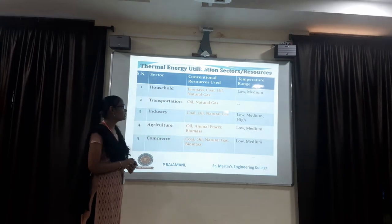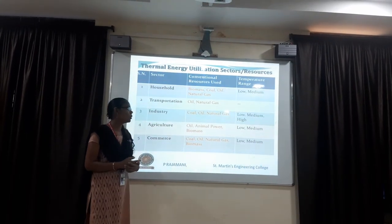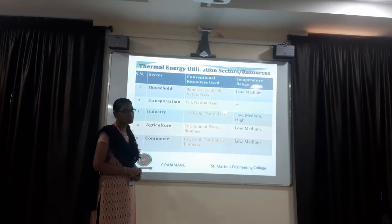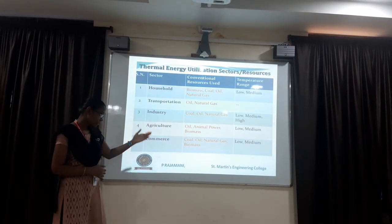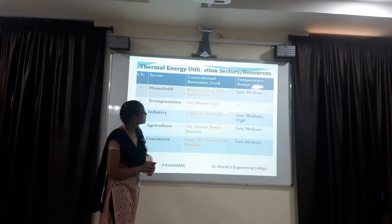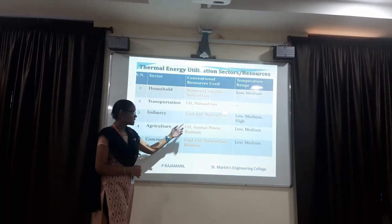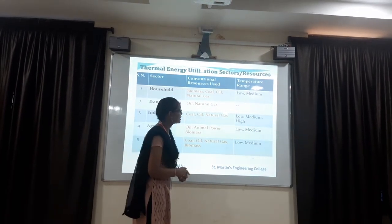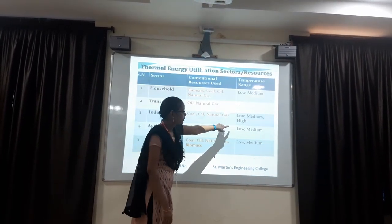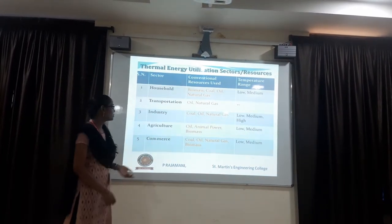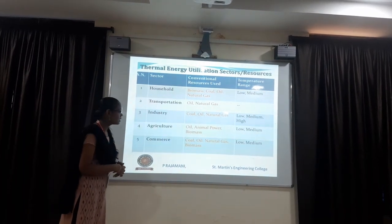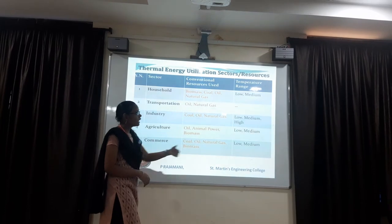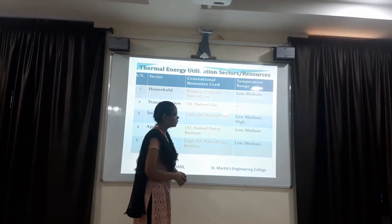In industry also, we are using coal, oil, and natural gases. These are conventional resources. All these conventional resources are not natural - they are non-renewable. Here the temperature energy ranges from low, medium, to high. In agriculture, we use oil, animal power, and biomass. The temperature energy is low to medium.